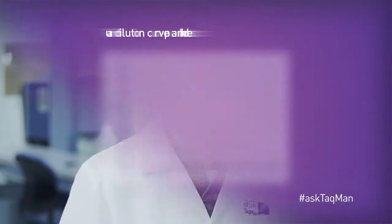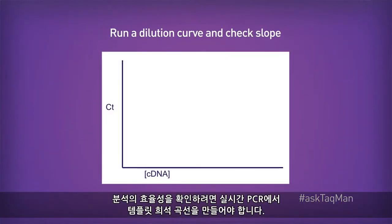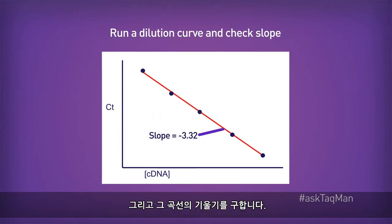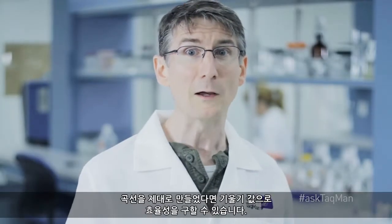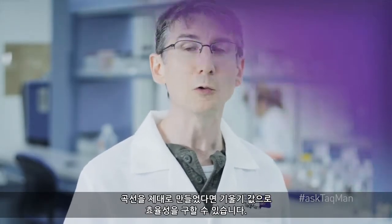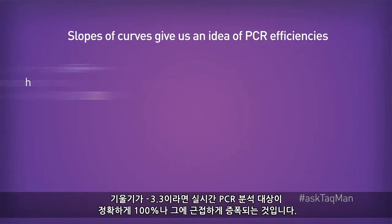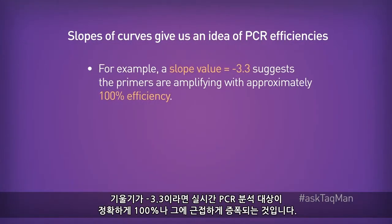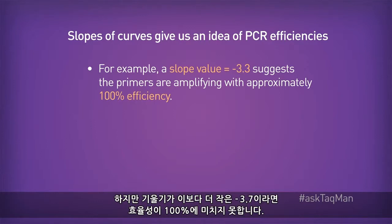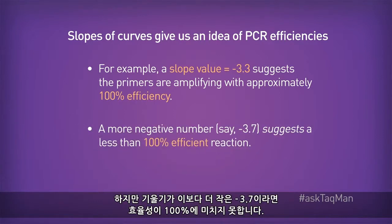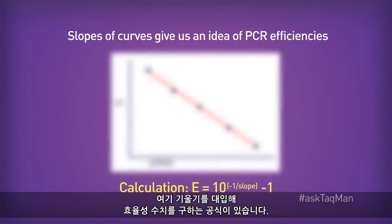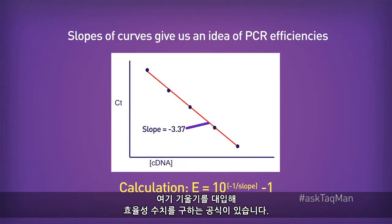Let's start with the basics. To measure the efficiency of an assay, you need to run a template dilution curve in real-time and then look at the resulting slope of that curve. That slope value, assuming you prepare the curve properly, tells you the efficiency. If the slope is negative 3.3, then the assay is amplifying at or very near 100%, exactly what we want in quantitative real-time PCR. But if that value is more negative than this, say negative 3.7, then the efficiency will be less than 100%. There's actually a formula into which you can plug this slope and get your numerical efficiency.